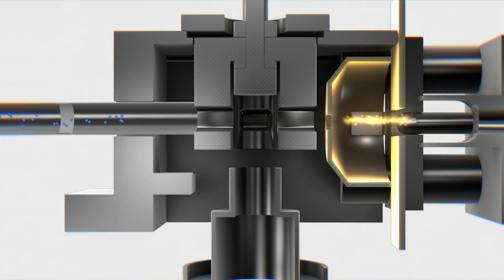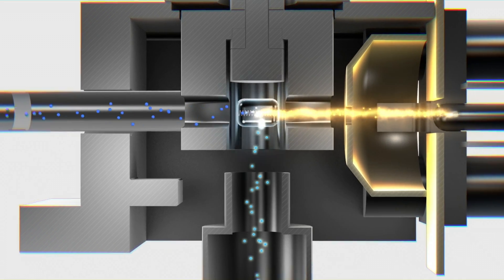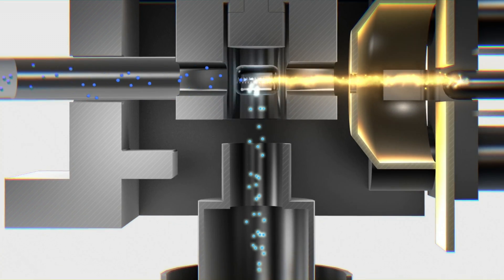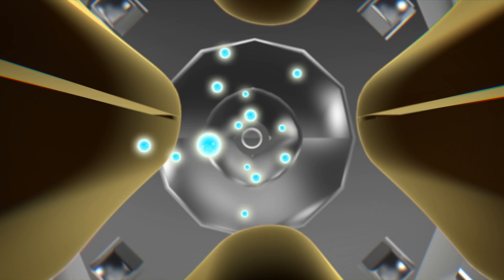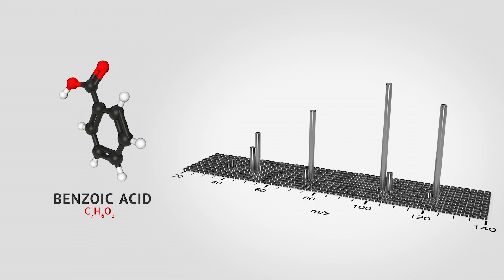Next, a beam of electrons ionizes the molecules, giving them a positive electric charge and deflecting them towards the linear ion trap. The ions are caught by a fluctuating electric field and sent to a detector to determine the chemical makeup.